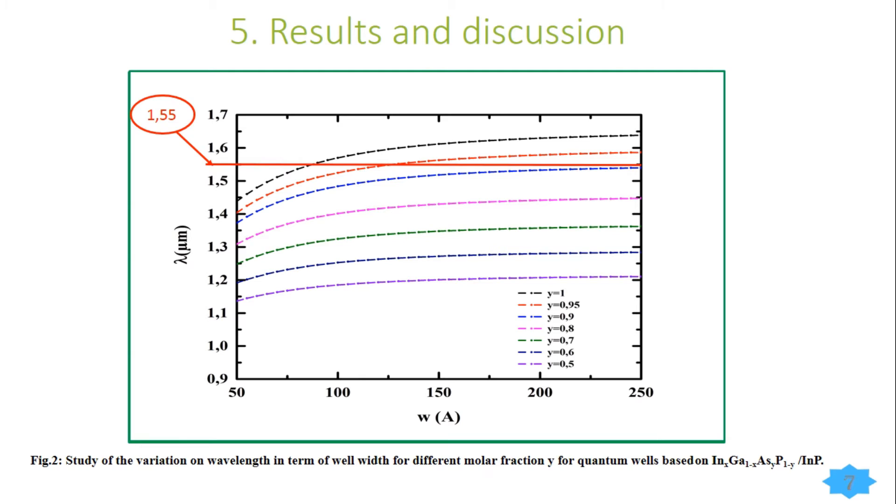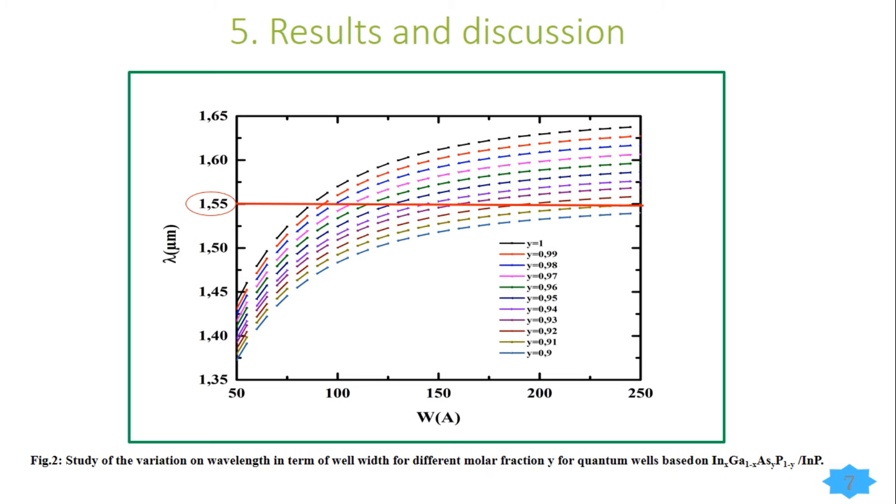We notice that for less than y equals 0.9, the variation of wavelengths cannot achieve 1.55 micrometers. So for this reason, we change the interval of study to y more than 0.9. We can notice that all the graphs cross 1.55 for different well widths. And we observe that for the highest concentration of phosphor in the alloy, the transition energy increases and the wavelength decreases.